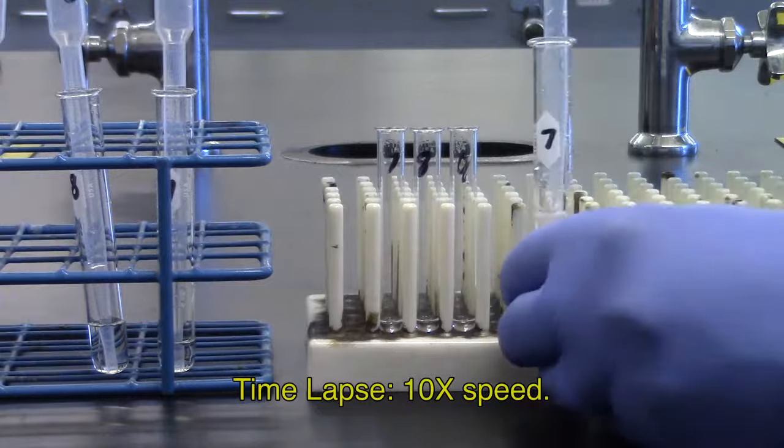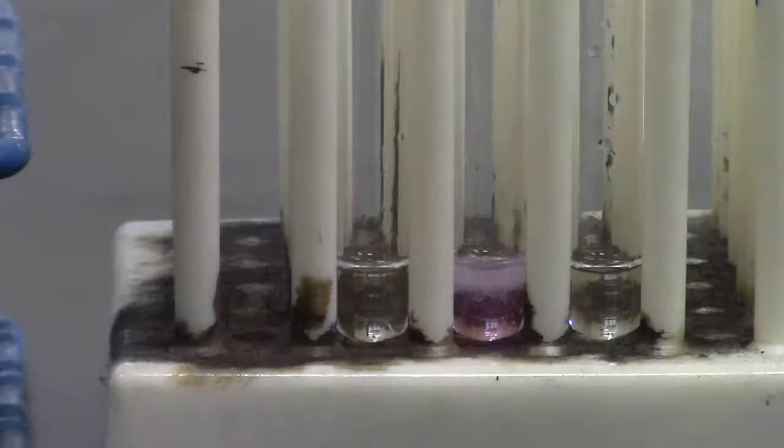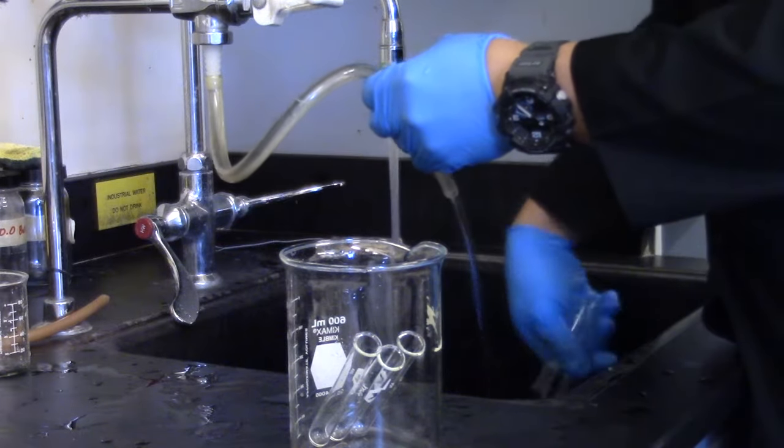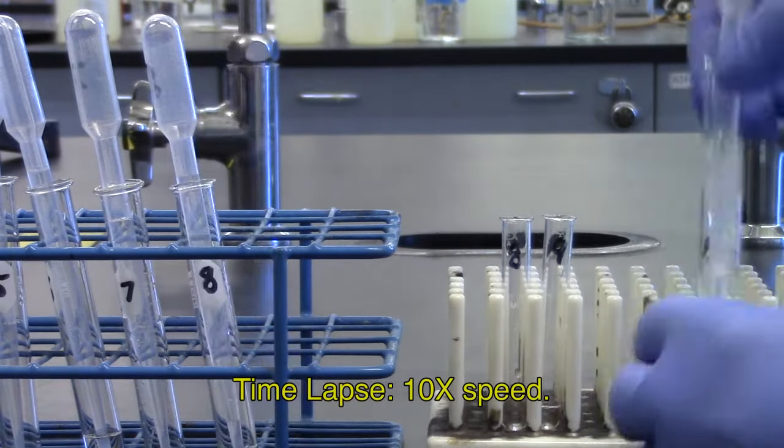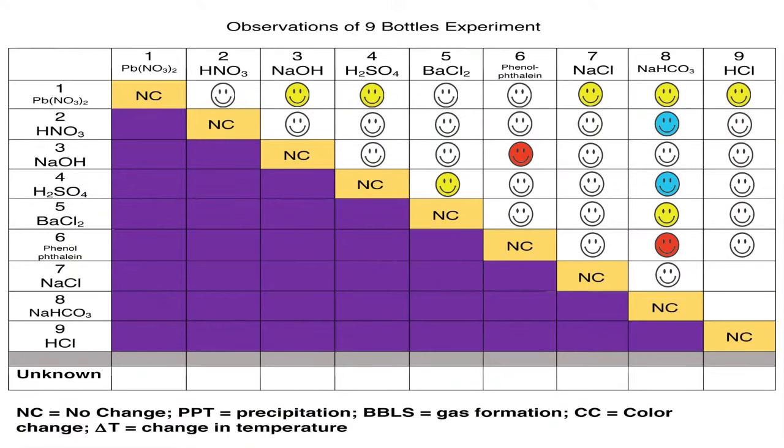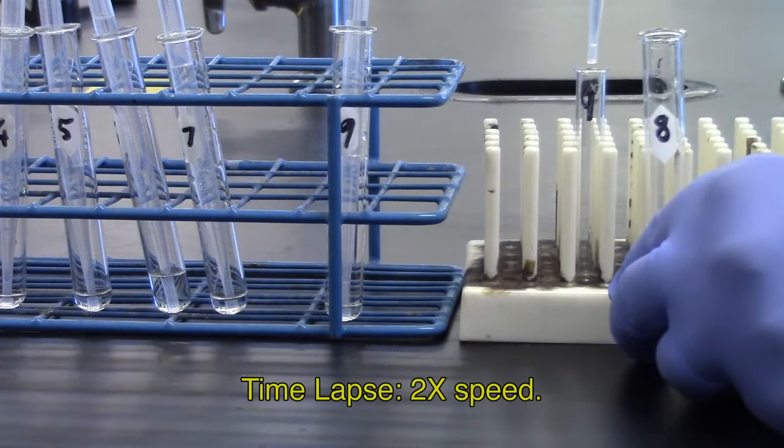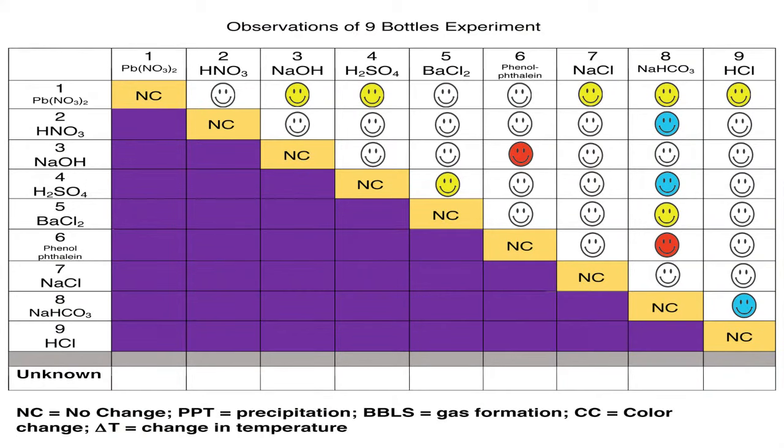Then number six, phenolphthalein, with seven to nine. Next, number seven, potassium iodine, with eight and nine. And finally, round eight. You combine number eight, sodium bicarbonate, with number nine, hydrochloric acid.